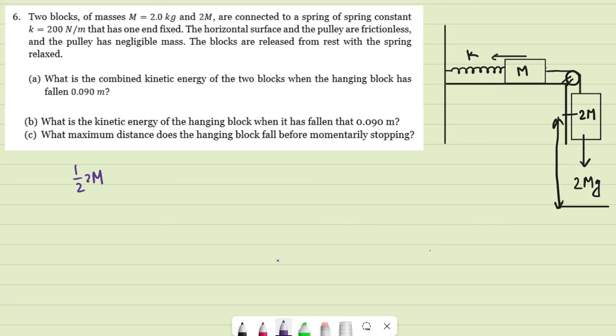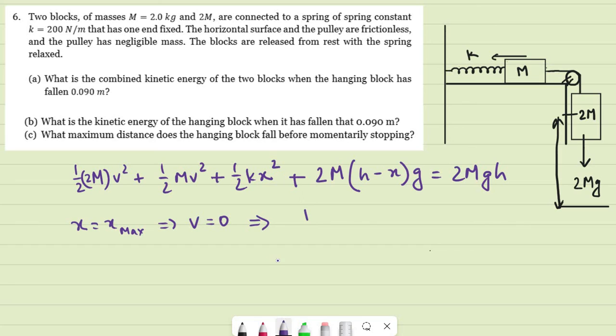So half twice m times v squared plus half m v squared. So that was the kinetic part. And the potential part was half kx squared. So this is maximum, x is maximum when v equal to 0. Then what do we have? We have plus twice m times h minus x times g equals twice mgh. So when x is maximum, x equal to x max, we have v equal to 0 because the object has to stop. So that would indicate that half kx squared minus 2mgx equal to 0.